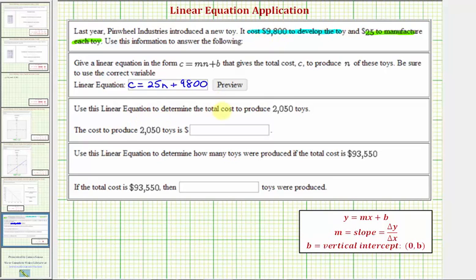Now we're asked to determine the total cost to produce 2,050 toys. So they're telling us here that N equals 2,050. We want to determine what the total cost would be.